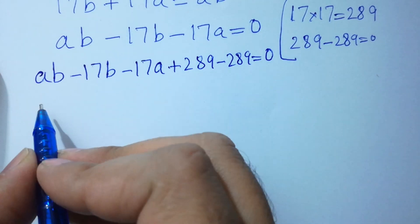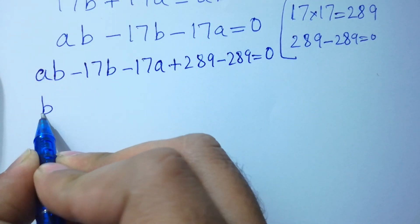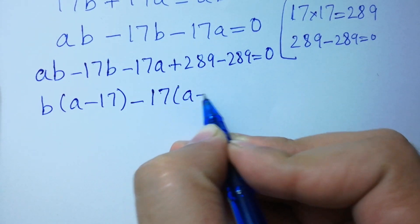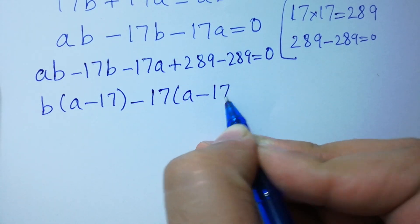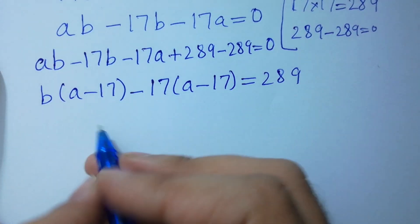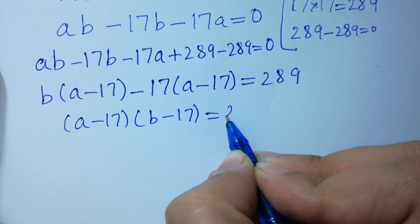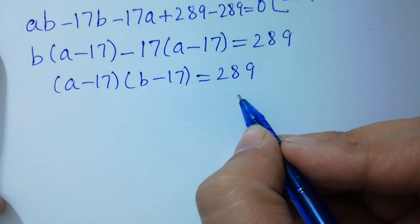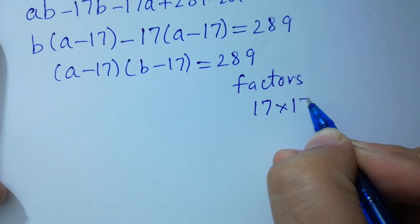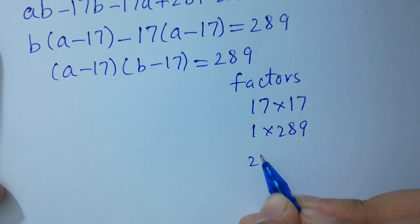This is easy to solve using factorization. Taking b common from the first two terms: b(a minus 17) minus 17(a minus 17) plus 289 equals 289. So we get (a minus 17)(b minus 17) equals 289. The factor pairs of 289 are: 17 times 17, 1 times 289, and 289 times 1.